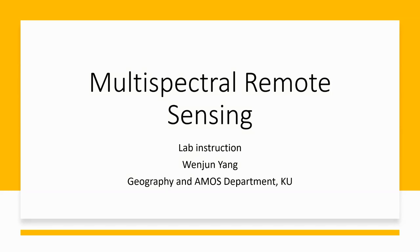Hello everyone. In this video we will introduce some different sources of multispectral remotely sensed imagery. Before the lab, please go to the Blackboard and download the images. We have five images in total, respectively from Landsat, SPOT, and IKONOS.